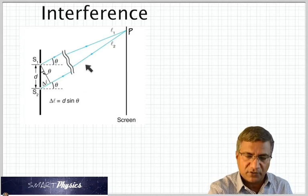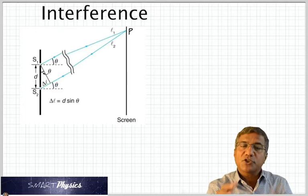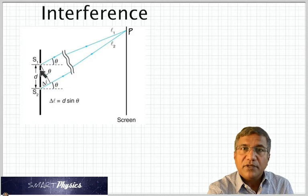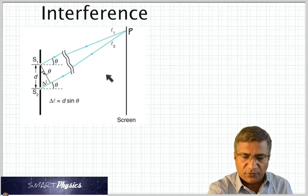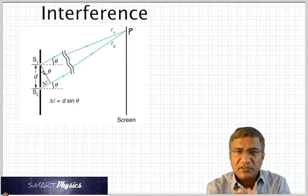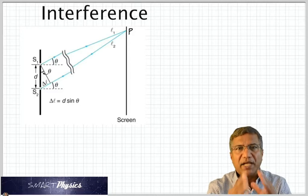That only happens at the center of the screen. At the center of the screen, the paths are going to be equal. And so at the center, you will get the fifth crest from S1 falling on the fifth crest from S2, and that produces maxima. So the central part of the screen is bright, or it's a maxima.